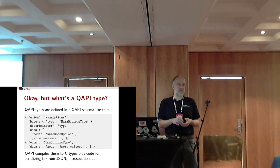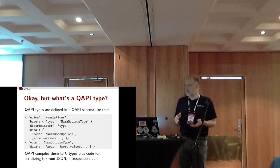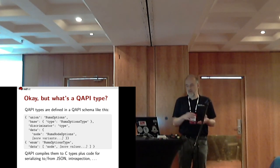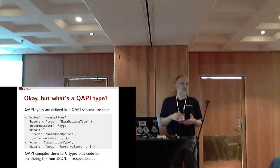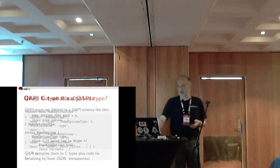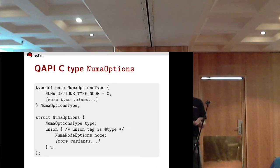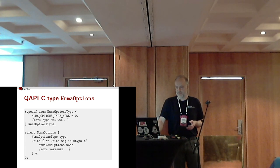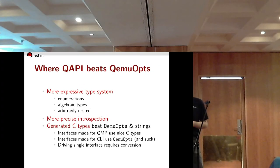What's a QAPI type? QAPI is the infrastructure behind QMP. QAPI types are defined in a QAPI schema — this is NumaOptions, or part of it. QAPI compiles these types to C types plus code to serialize to and from JSON, introspection, and more. This is the C type it generates for NumaOptions — it's pretty pedestrian, you've probably written stuff like that yourself many times.